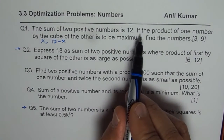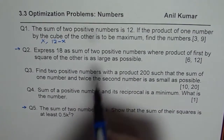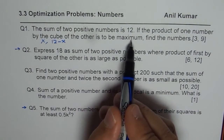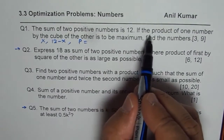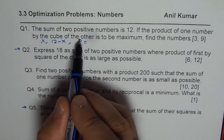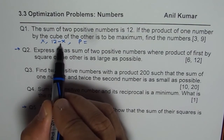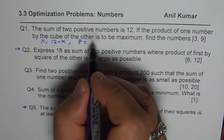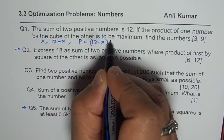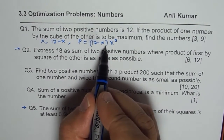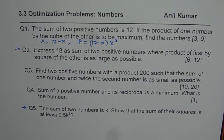The second statement says: if the product of one number by the cube of the other is to be maximum, we are looking for a maximum product, so we use p. It says product of one number by the cube of the other — you have a choice, you can cube any one of them. I will prefer to cube x, so I have (12 − x) as my first number, multiplied by x cubed. These steps help you simplify while working to optimize the question.